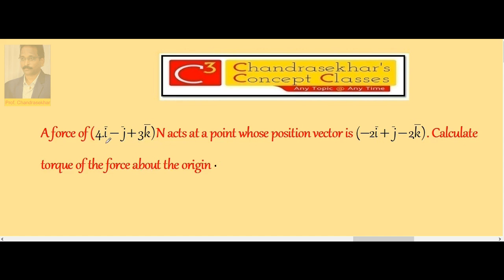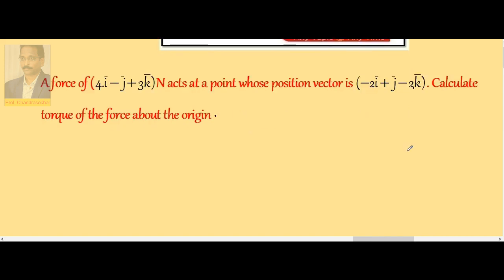Now here force vector is given 4î - ĵ + 3k̂ and a position vector about the origin. It is -2î + ĵ - 2k̂. So we know that τ = r × F.